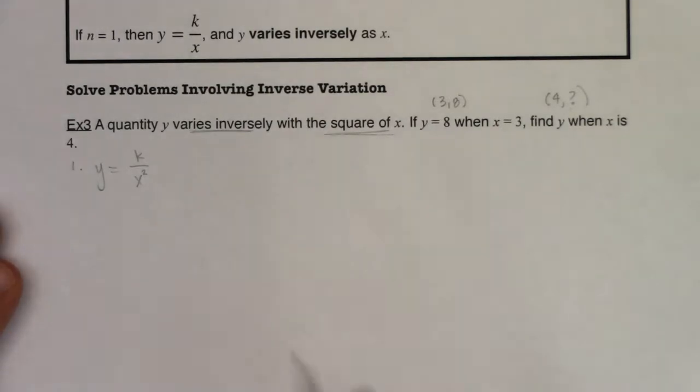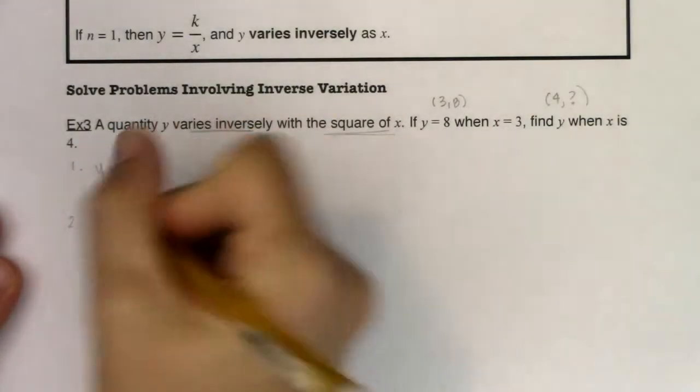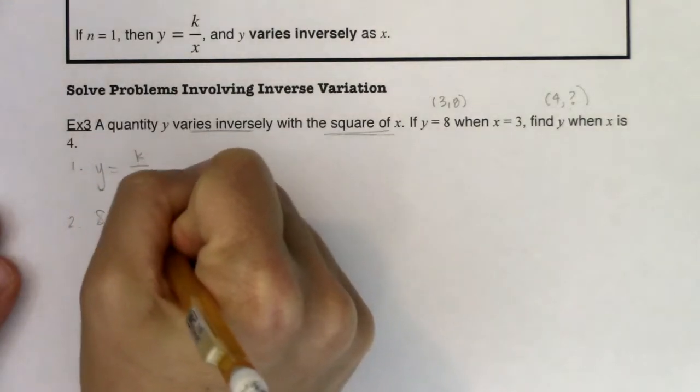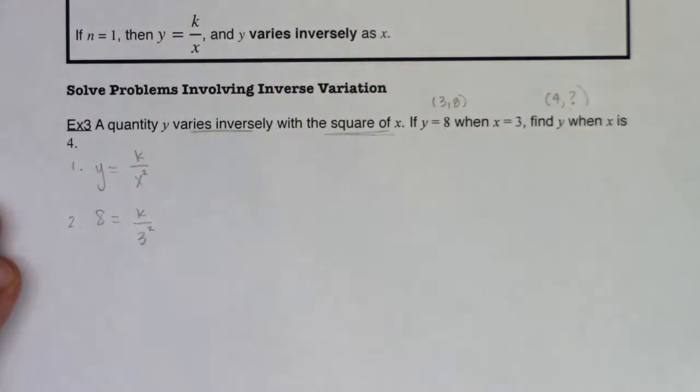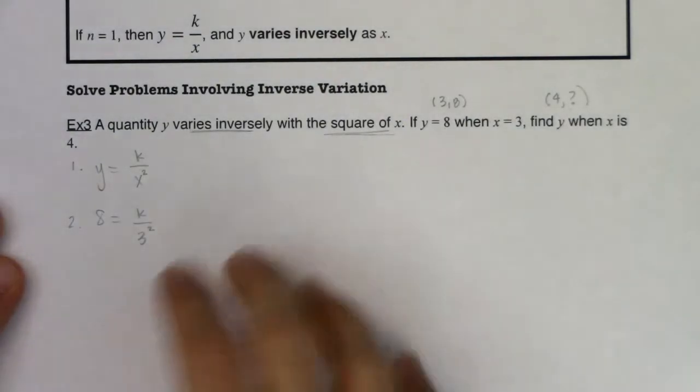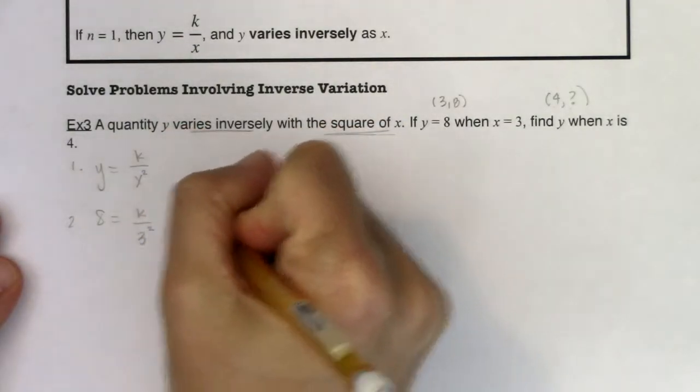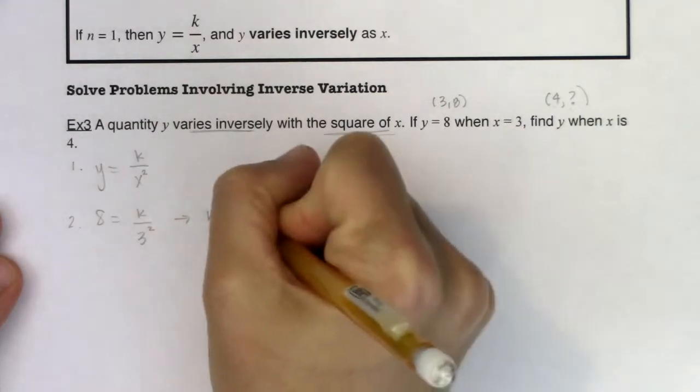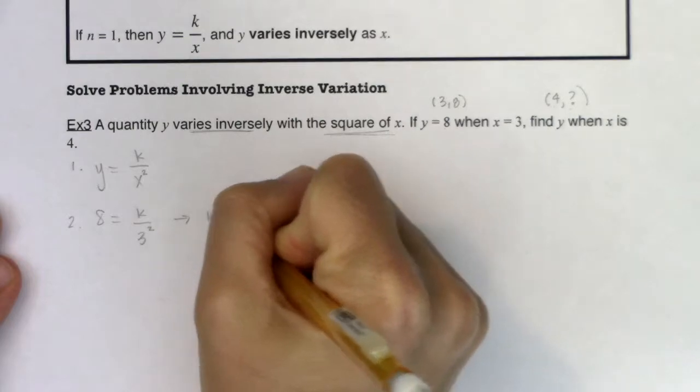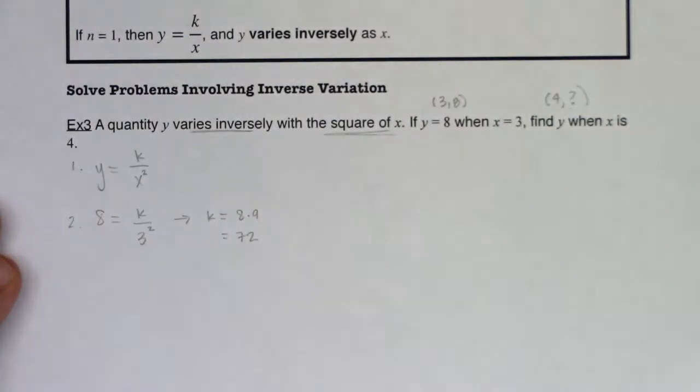All right, so let's take a look. Here we go. I'm going to have y, which would be 8, is equal to k over 3 squared. So I'm substituting in that complete ordered pair. And when we go ahead and we solve this, I'm going to get k is equal to 8 times 9, because I'm going to multiply the 9 over. So k is going to be equal to 72. Great.